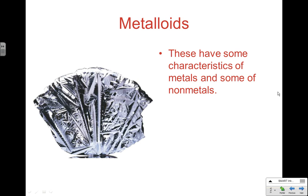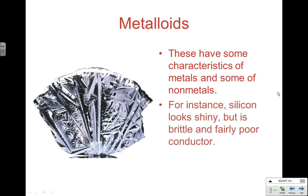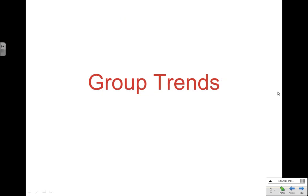Metalloids have properties of both metals and nonmetals. For instance, silicon is really shiny but very brittle — hit it with a hammer and it acts like a nonmetal. It's shiny but also a fairly poor conductor. So it does conduct, but it's in between metals and nonmetals — it's a semiconductor.